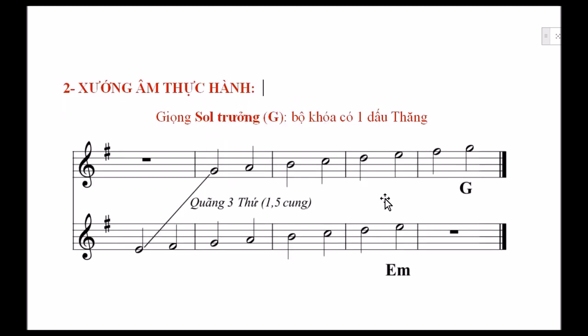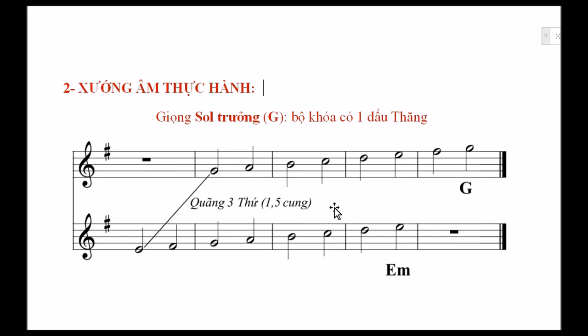Bước sang phần thứ hai, xướng âm thực hành. Trong bài học hôm nay, chúng ta thực hành xướng âm giọng son trưởng với bộ khóa có một dấu thăng. Đây là thang âm son trưởng, và đây là thang âm mi thứ. Son trưởng và mi thứ, như đã nói, là hợp âm song song, cách nhau một quãng ba thứ.